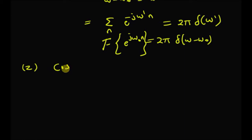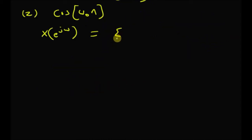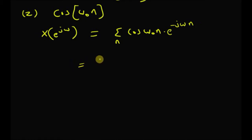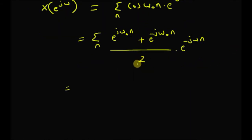Now let us look at the cosine function, that is cos(ω₀n). Given this sequence, we want to find the DTFT: X(e^(jω)) = Σ cos(ω₀n)·e^(−jωn). By definition, cos(ω₀n) can be written as [e^(jω₀n) + e^(−jω₀n)] / 2, which is derived from Euler's relation between the complex exponential and the sinusoids. Substituting, we have that expression multiplied by e^(−jωn).